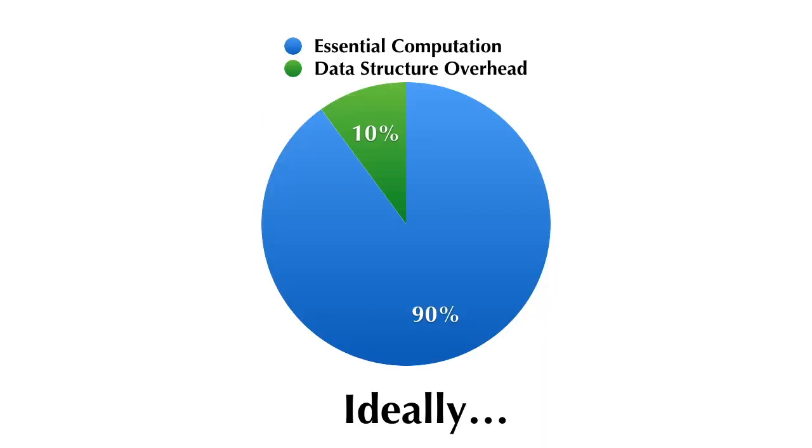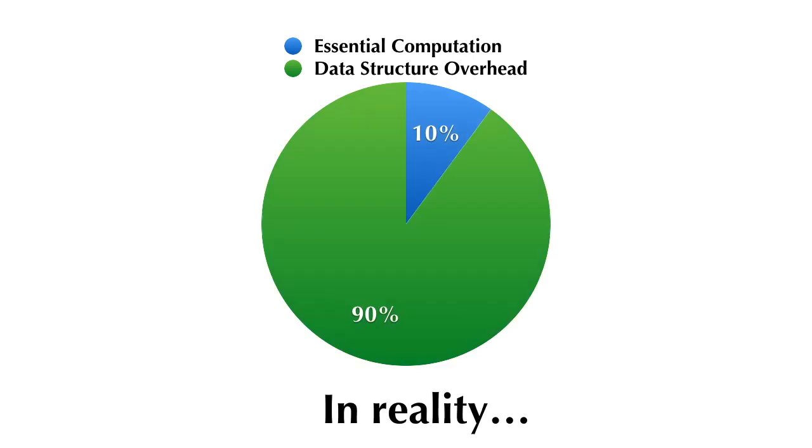Ideally, one would expect data structure overhead to be as small as 10%, and the majority of clock cycles are spent on essential computation. However, when it comes to sparse computation, the situation is often reversed. 90% of the clock cycles are spent on data structure overhead, and 10% on essential computation, and sometimes even worse.